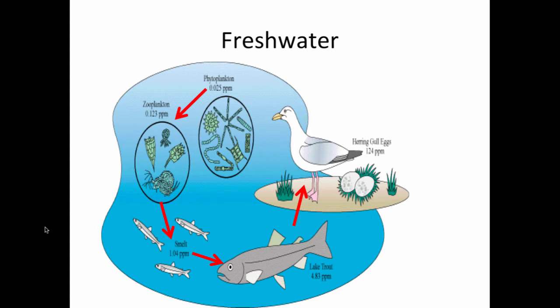Here's a picture of a food chain for freshwater. We start off with phytoplankton. This is actually magnified so you can see it, because these are single-celled organisms which are microscopic. We know that because it has the prefix 'phyto' that they must be the producer. These are protista, which are photosynthetic single-celled organisms, which is why they're not in the plant kingdom. So these are our producers.